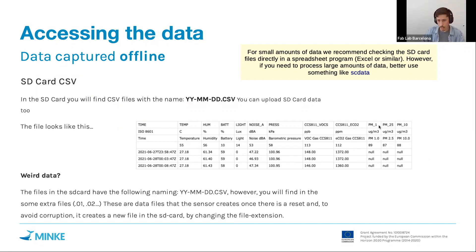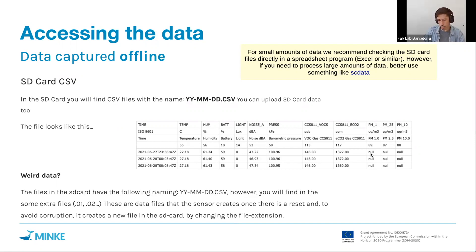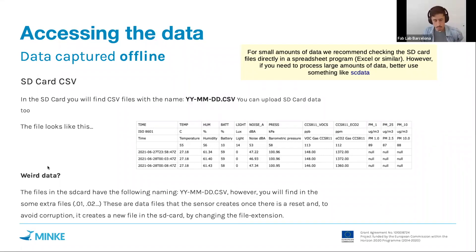In the PM columns you may see nulls — this is the way of specifying there's no data in that column, which can be due to different reasons. In this case it's not a sensor problem, but because data is recorded less frequently for the particulate matter sensors to save battery, since they consume a lot of power.